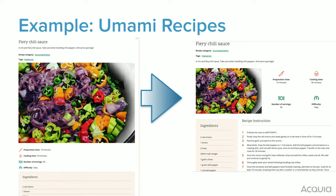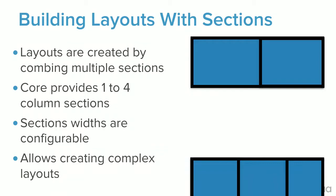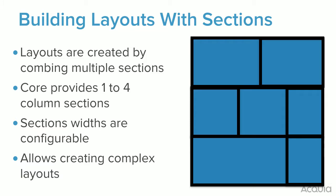Out of the box, Drupal just gives you a column of fields that you can put in there. You have field formatters, but you can't arrange stuff. Layouts are created by multiple sections, and each section can be a different number of columns, and the column widths are configurable. This allows you to create complex layouts, which we'll see today. Let's dive in.